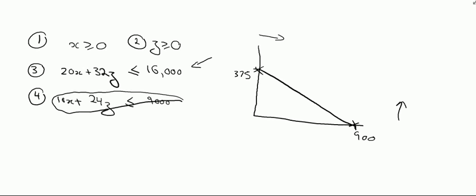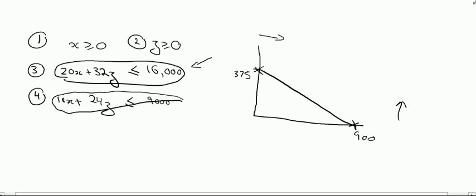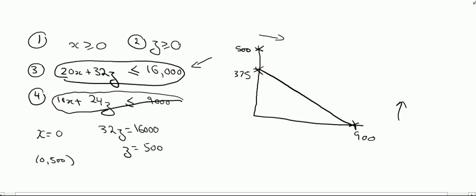This change in constraint will cause a shift in the line. Drawing the new line: if x is equal to 0, our equation becomes 32z equals 16,000, and z equals 16,000 divided by 32, which is 500. So the new corner point will be (0, 500). When z is 0, 20x equals 16,000, and 16,000 divided by 20 is 800. So our new point will be (800, 0), and the line shifts accordingly.